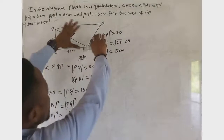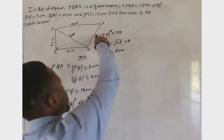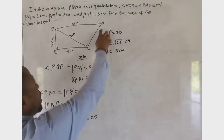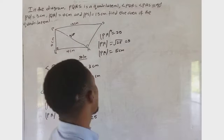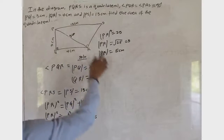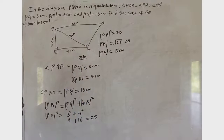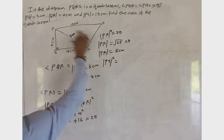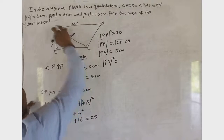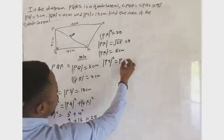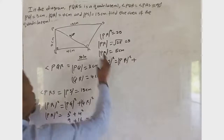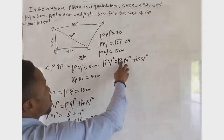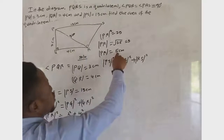So the first triangle is now complete. For the second triangle, we have two sides so far. We need to find the third side, which is RS. We use the Pythagorean theorem again: the largest side PS squared is equal to the sum of the squares of the other two sides — PR² plus RS².